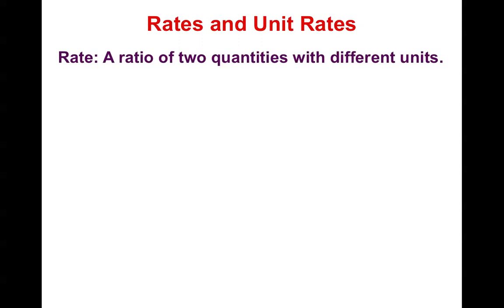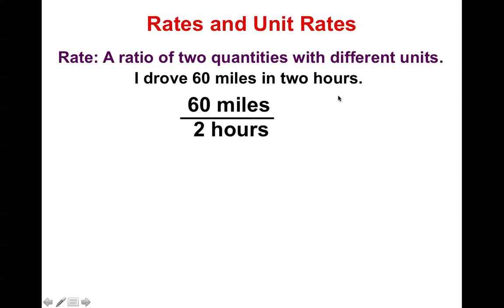Okay. The other word we have is what's known as a rate. A rate is a ratio of two quantities with different units. So if I drove 60 miles in two hours, notice I have two different units. I have miles and I have hours. If I write this as a unit, I went 60 miles in two hours.